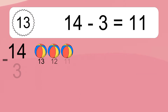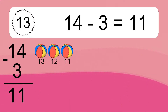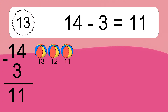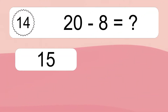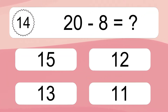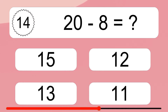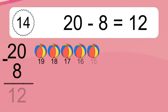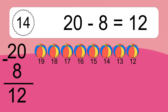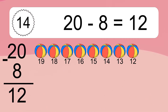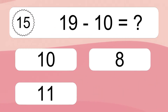14 minus 3 equals 11. Let's count it! 13, 12, 11. 20 minus 8 equals what? 20 minus 8 equals 12. Let's count it! 19, 18, 17, 16, 15, 14, 13, 12. 19 minus 10 equals what?